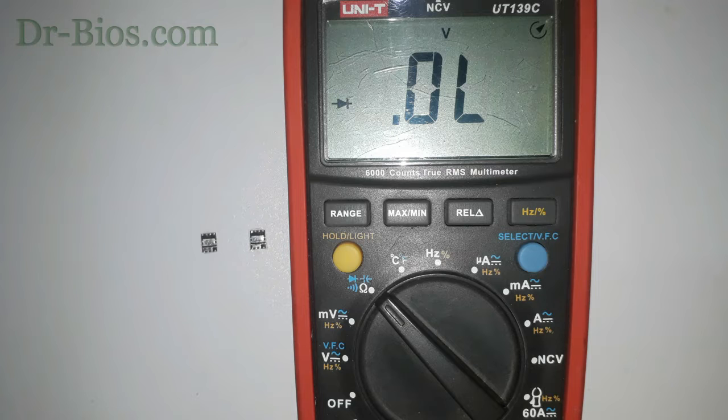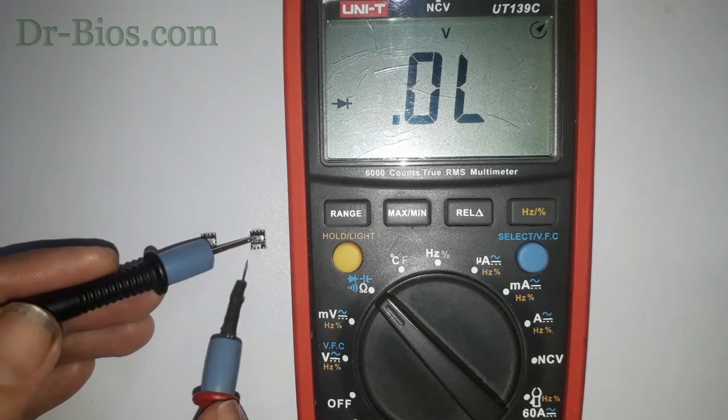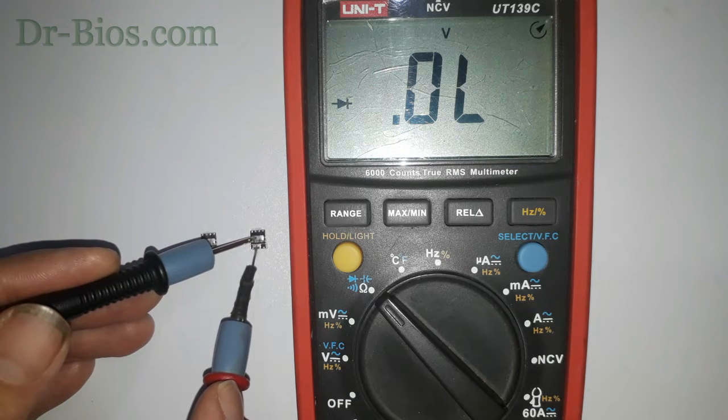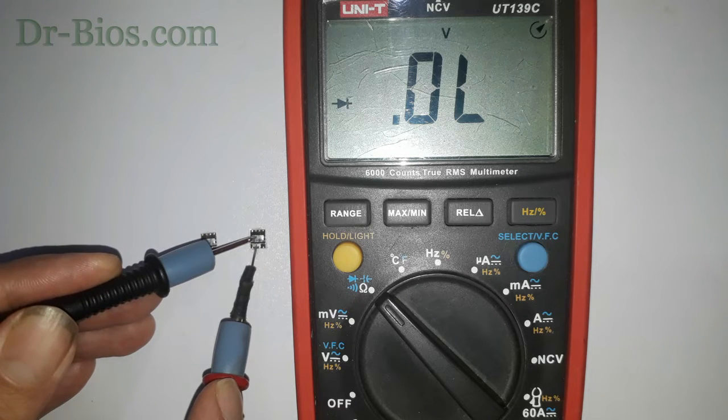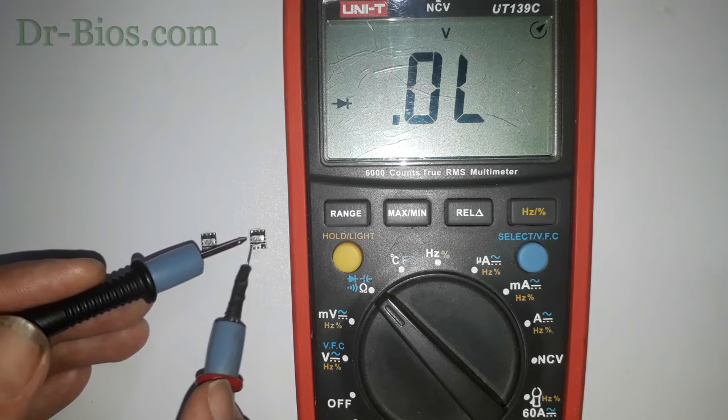Nothing needs to appear on the other way by reversing the probes. Yes, as you see, nothing appears. So internal diode of this MOSFET is OK up until now.